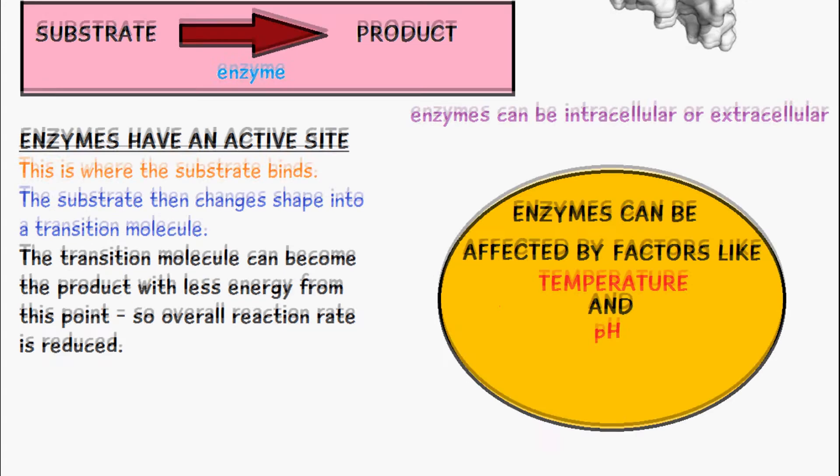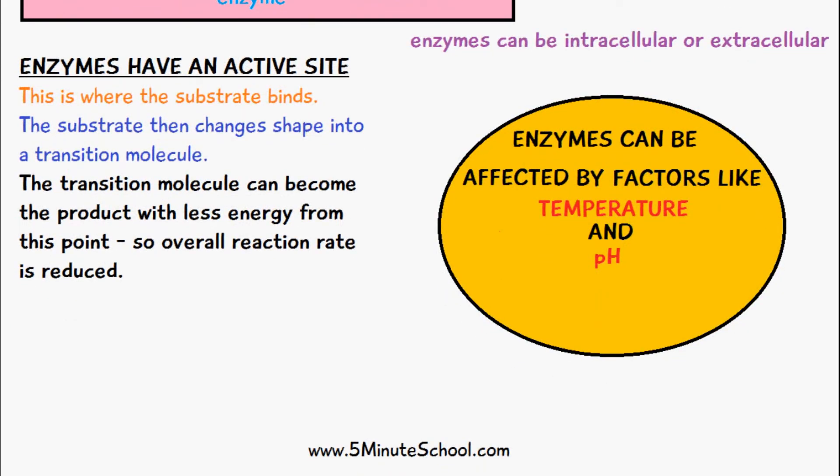pH is another factor which affects enzymes. Like temperature, all enzymes have an optimum pH which they work best at — usually about 7 to 8 on the pH scale, which is the physiological pH in most cells. But some enzymes work in extreme pHs, like protease enzymes which break down proteins in the stomach — they work at very low pHs because of the stomach acid. Basically each enzyme has an optimum pH, and when you exceed or go lower than this, changes occur in the active site and the substrate is no longer able to bind.